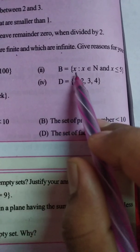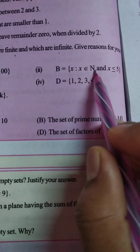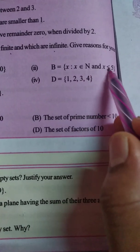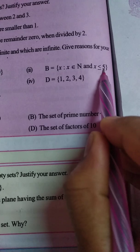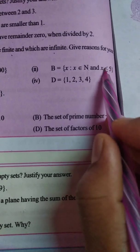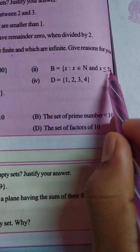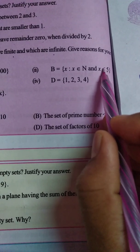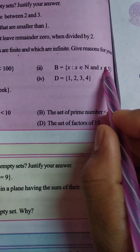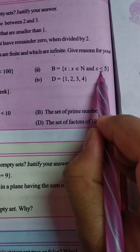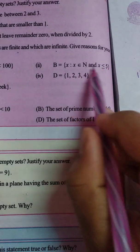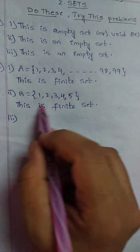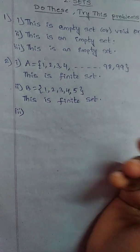B = {x : x ∈ N and x ≤ 5}. The natural numbers less than or equal to 5 are 1, 2, 3, 4, 5. We can count them, so this is a finite set.